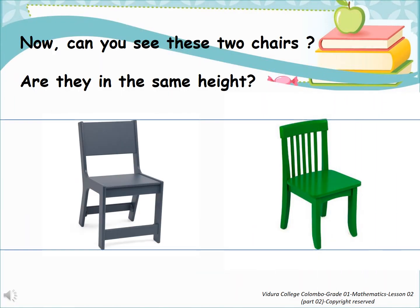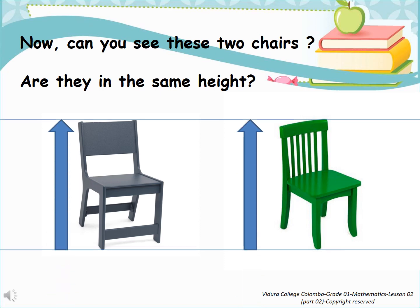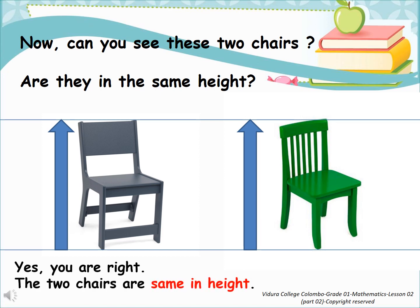Now, can you see these two arrows are in the same height? Are they in the same height? Two arrows are in the same line. Yes, you are right. The two chairs are same in height.